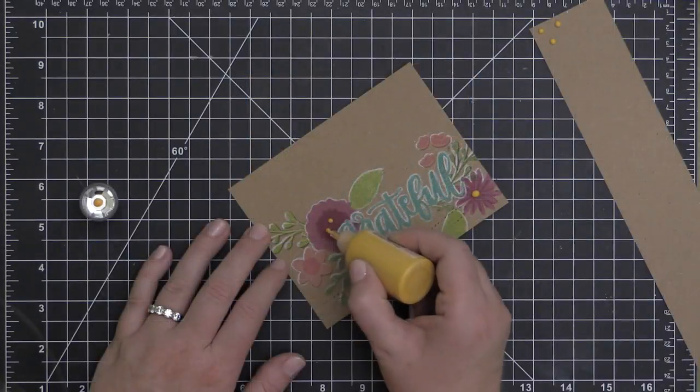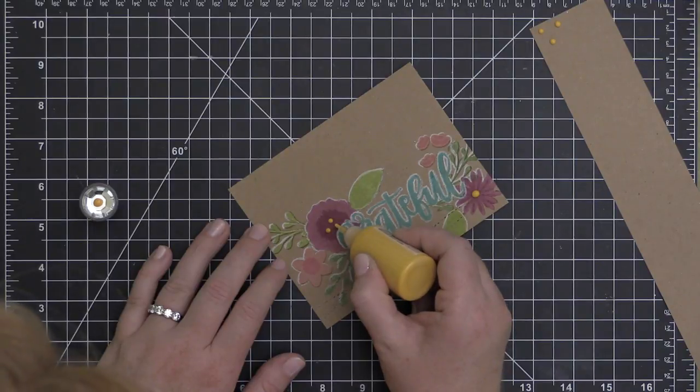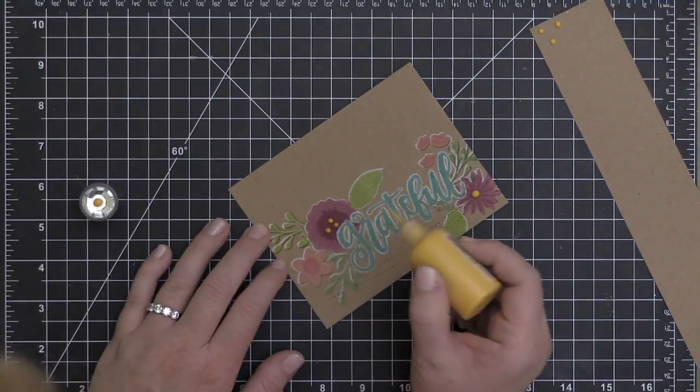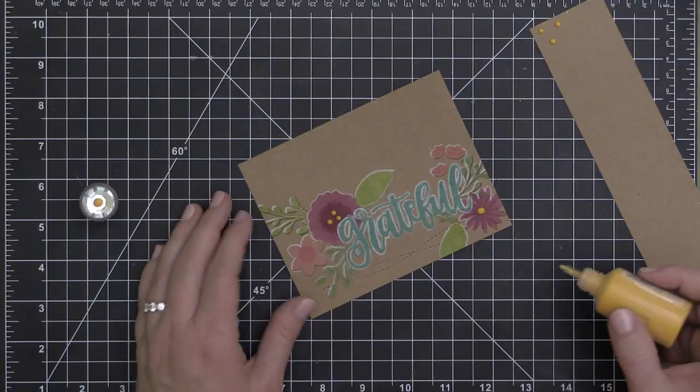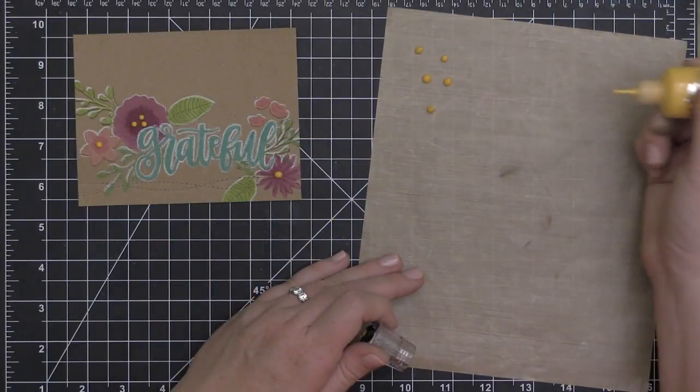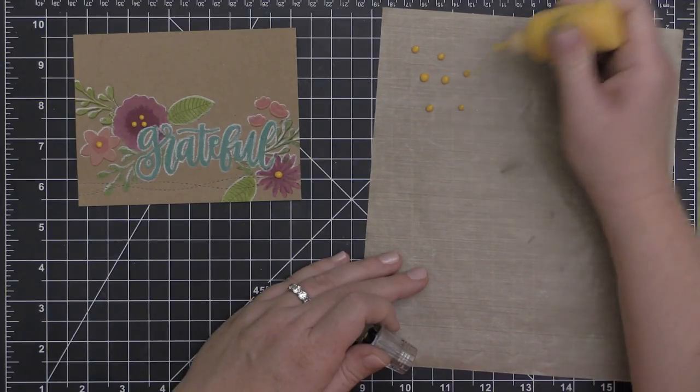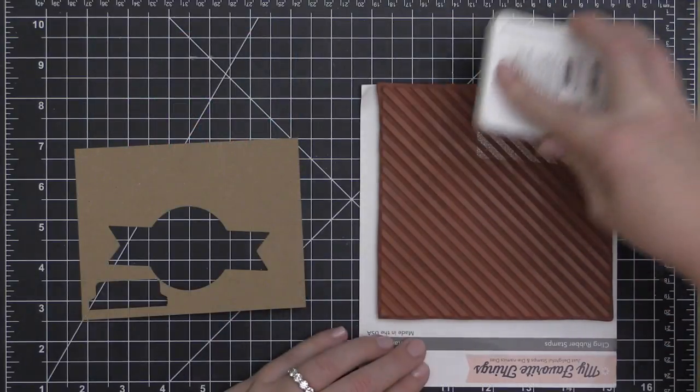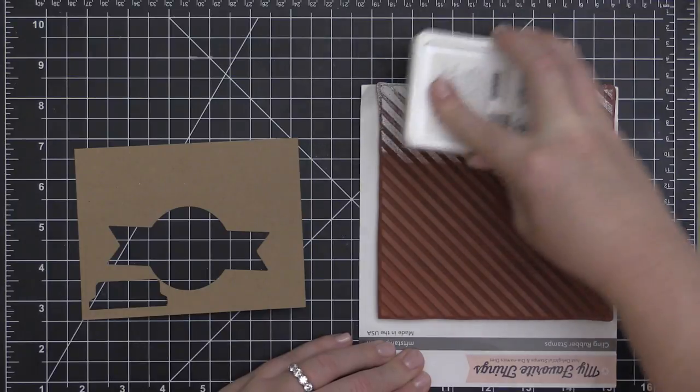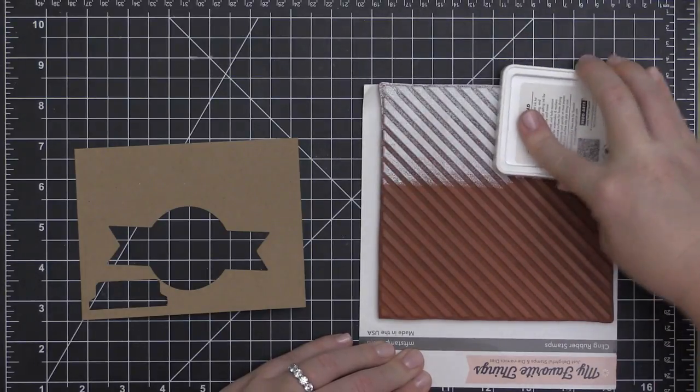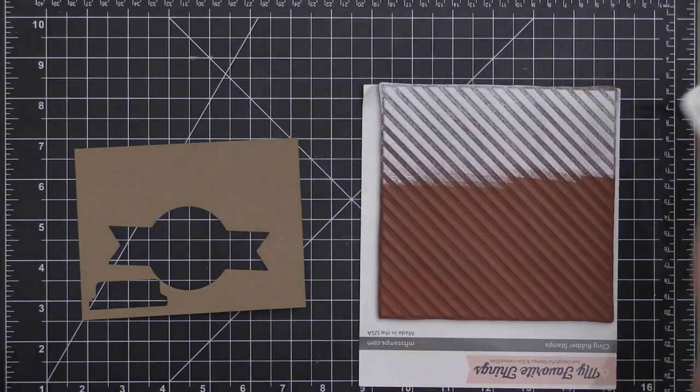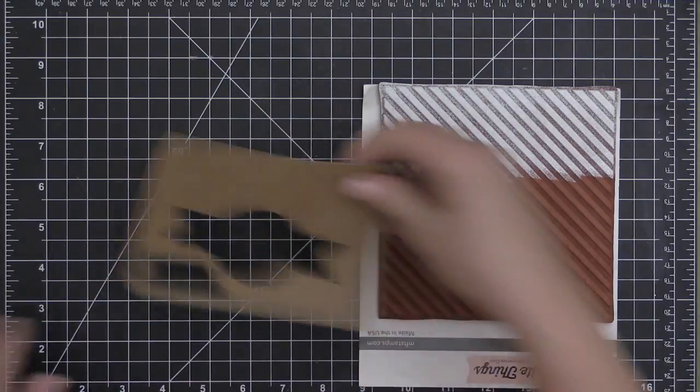I wanted to keep the colors of this card project really fall-like, so I'm accenting my flowers with a little bit of this mustard-colored Nuvo Crystal Drops. I'm just putting some drops there in the center, and then I also drop some of those onto my craft mat and I'm going to let those dry to embellish my second card.